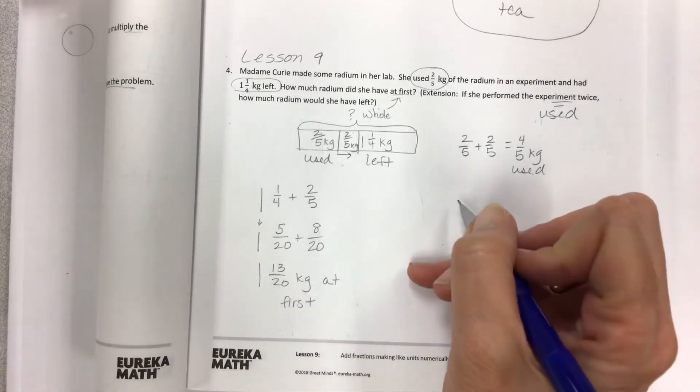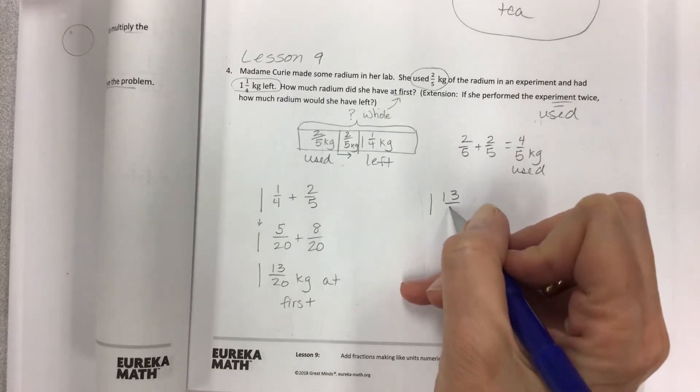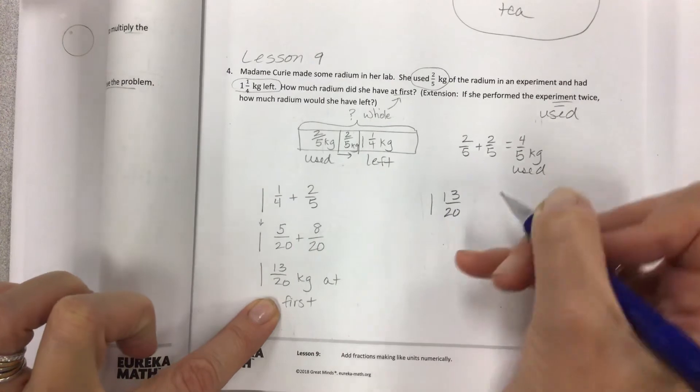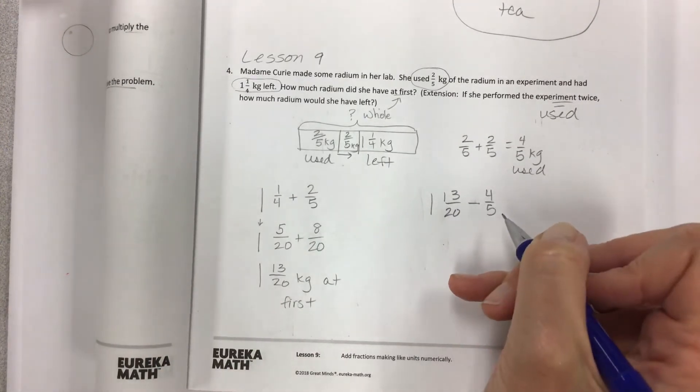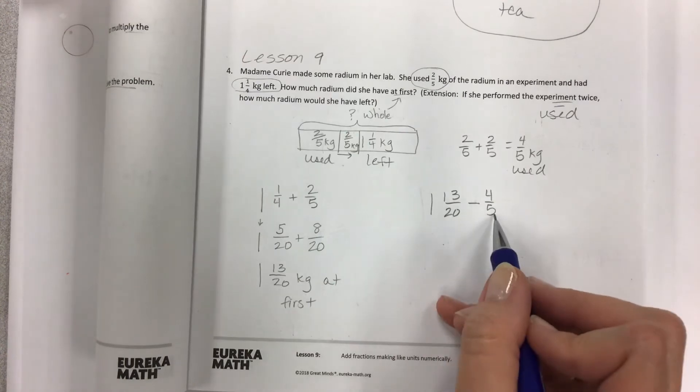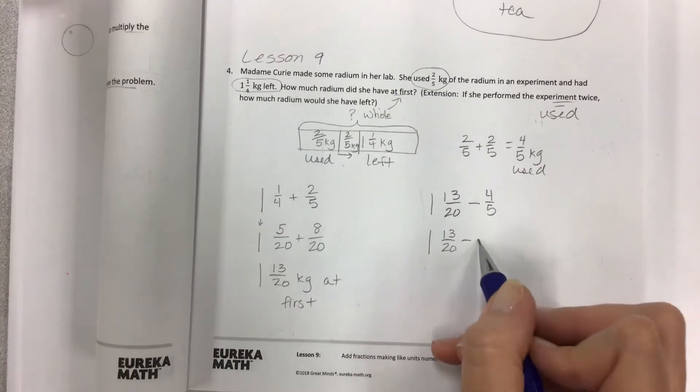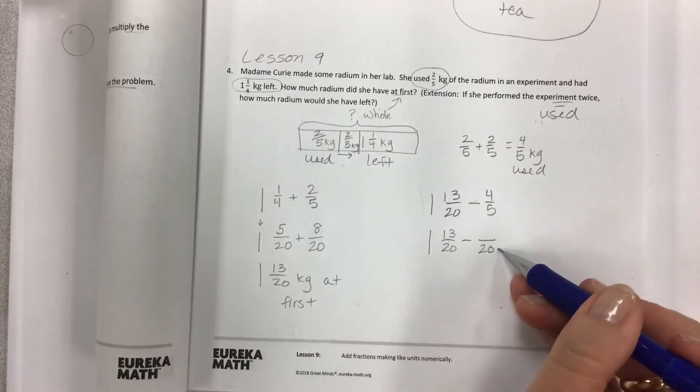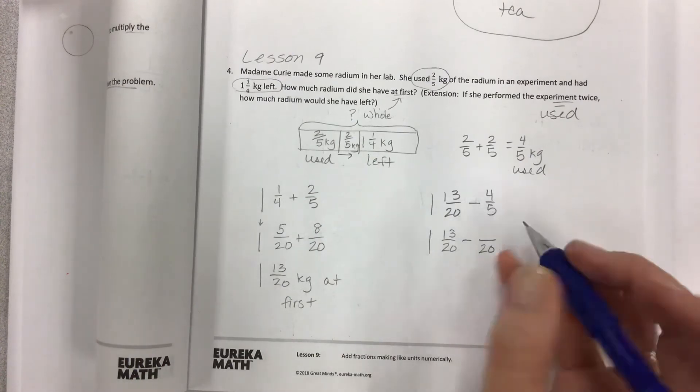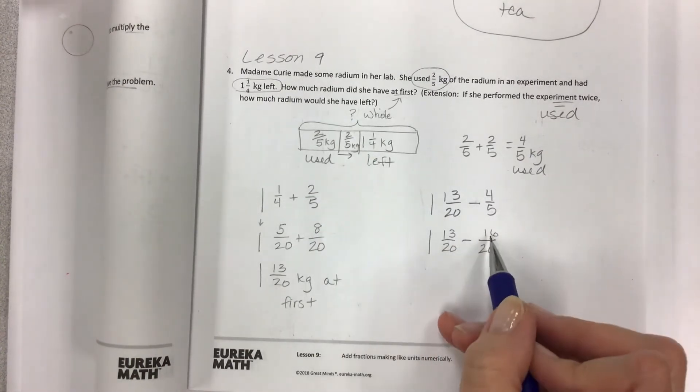But I can take that away from my total that I do know that I have now. So if I have one and thirteen twentieths, and then I can take away the four-fifths, then I just have to have a common denominator for this one. Minus some twentieths. So in order to get from five to twenty, the scale factor is four, so I would multiply four times four.